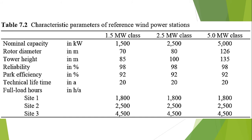The rotors are provided with three blades made of glass fiber reinforced plastic, whereas the towers are made of steel. For converter manufacturing, series production is assumed. Moreover, the converters are mounted on regular good load-bearing soil.